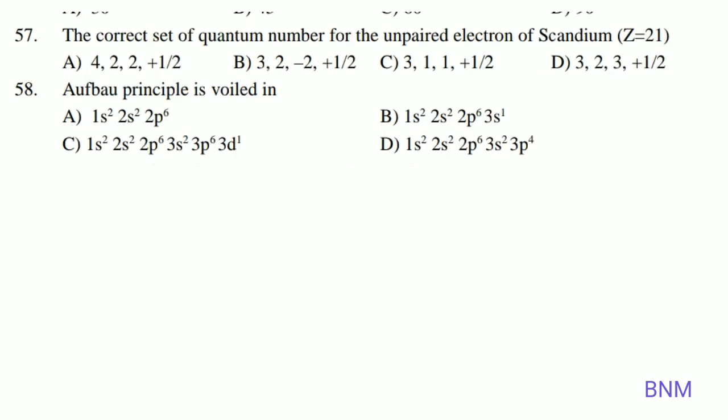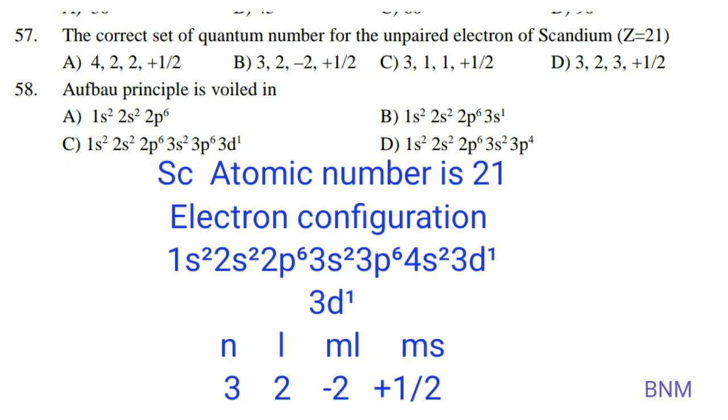The correct set of quantum numbers for the unpaired electron of scandium, Z equals 21. The electronic configuration is 1s², 2s², 2p⁶, 3s², 3p⁶, 4s², 3d¹. The unpaired electron is in the 3d orbital, and the four quantum numbers for this electron are determined accordingly.